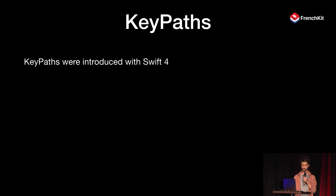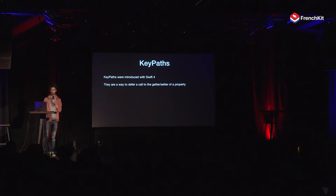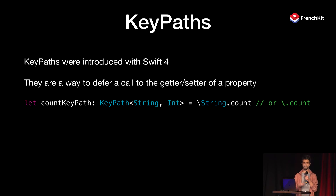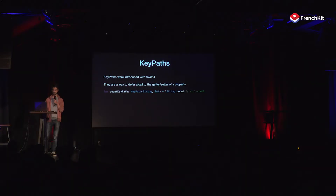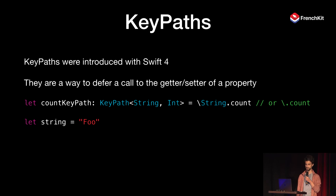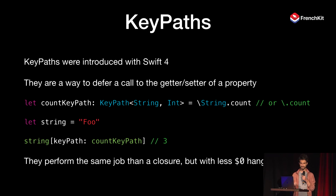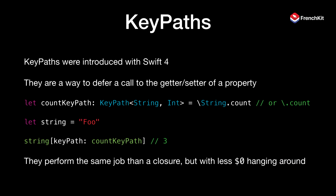Key paths are a feature that was introduced with Swift 4. Basically, they are a way to defer a call to the getter or setter of a property. So what does it look like in code? They are a type with two generic parameters: the first one is the type of the object you're going to call the key path on, and the second one is the type of the property you want to access. You construct them using backslash, then the name of the type, dot, name of the property. In many instances where the name of the type can be inferred, you can omit it. And you can chain for nested properties. You use it with a subscript that takes a key path and returns the value — basically like working with an object that acts like a statically checked dictionary. They perform the same job as a closure, but with less curly braces and dollar zeros.